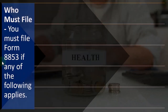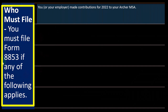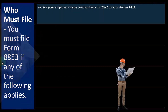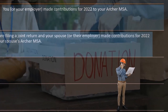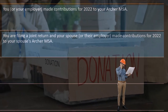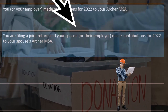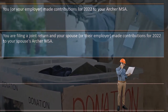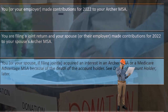So who must file? You must file Form 8853 if any of the following applies: you or your employer made contributions for 2022 to your Archer MSA, or you are filing a joint return and your spouse or their employer made contributions for 2022 to your spouse's Archer MSA.